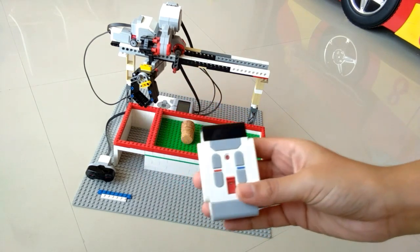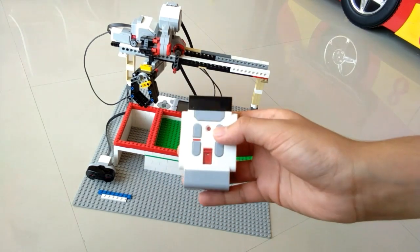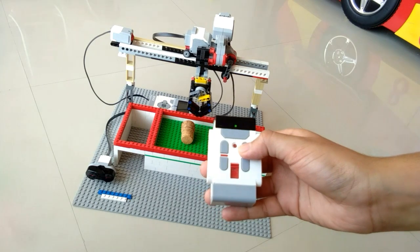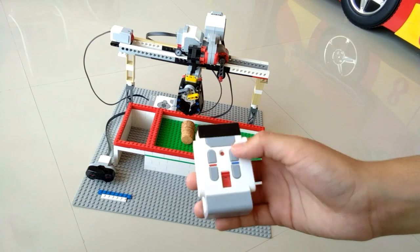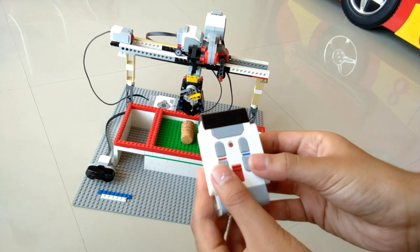So I can control the claw using the remote. To go right I have to press right and to go left I have to press the left button. And to go down I have to press both of these at the same time.